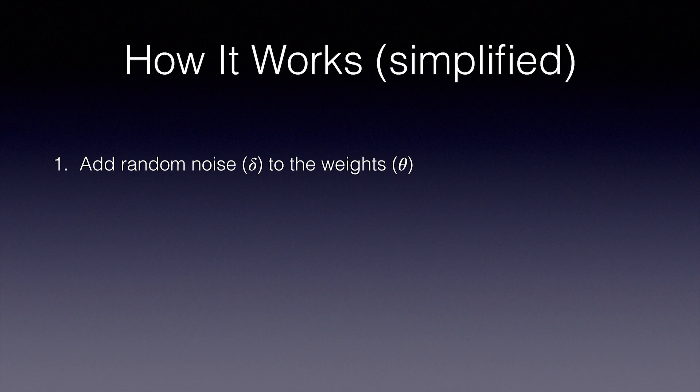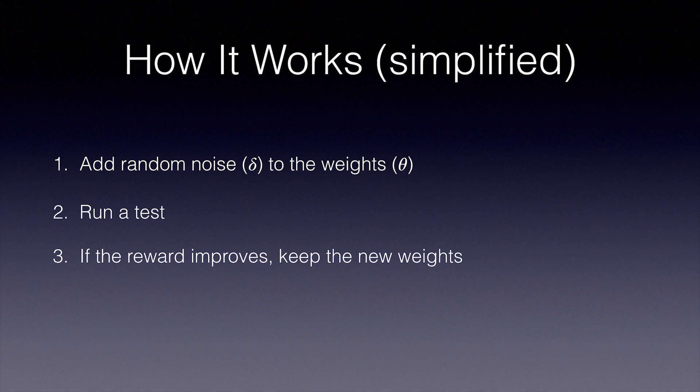We then test out the effect of the noise, and if it improves rewards, we keep it, otherwise we discard it. It's a genetic evolution type of algorithm where we make slight changes, always moving in the direction of improvement.